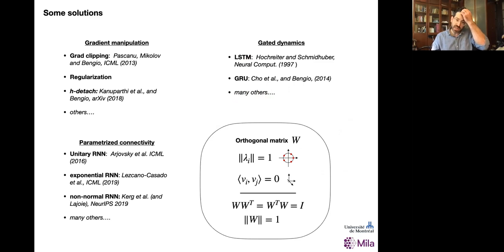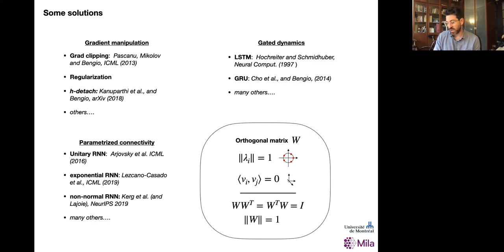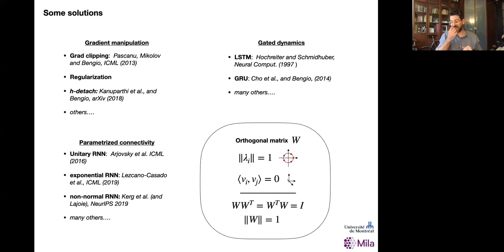Another solution is to have inductive biases that parametrize your connectivity matrix to promote less exponential problems, either exploding or vanishing. There's a long line of work using orthogonal matrices as the connectivity matrix so that your spectra promote stable and robust propagation of gradients, and optimizing parameters on low-dimensional subspaces of parameter space — staying on the manifold of all connectivity matrices that are orthogonal, for example.